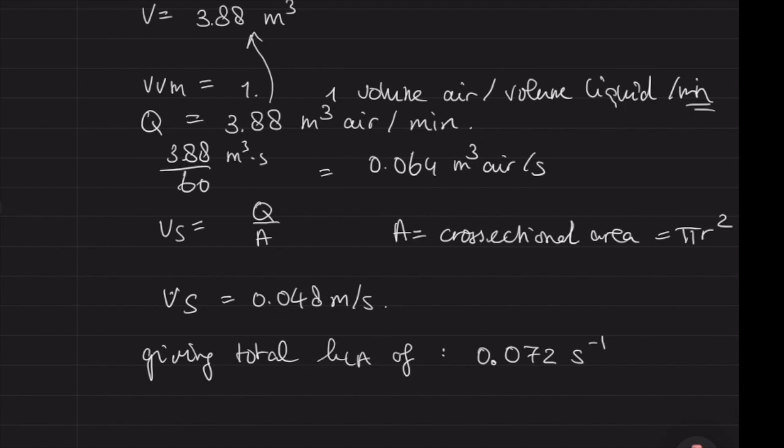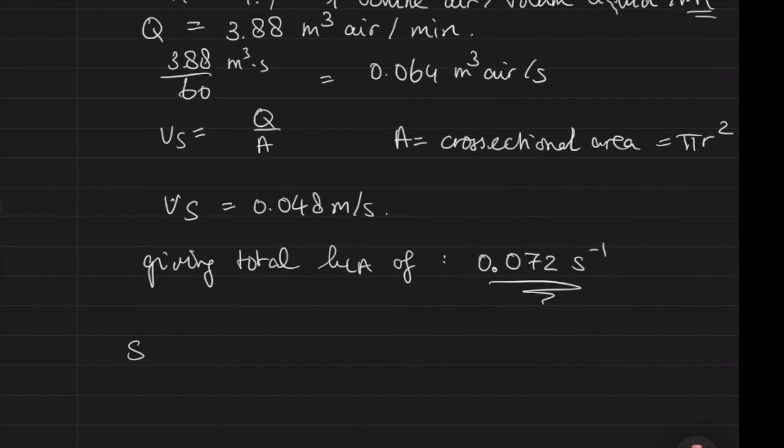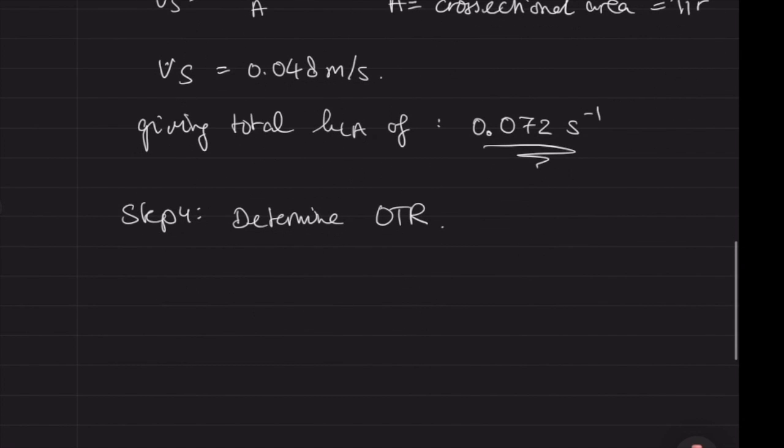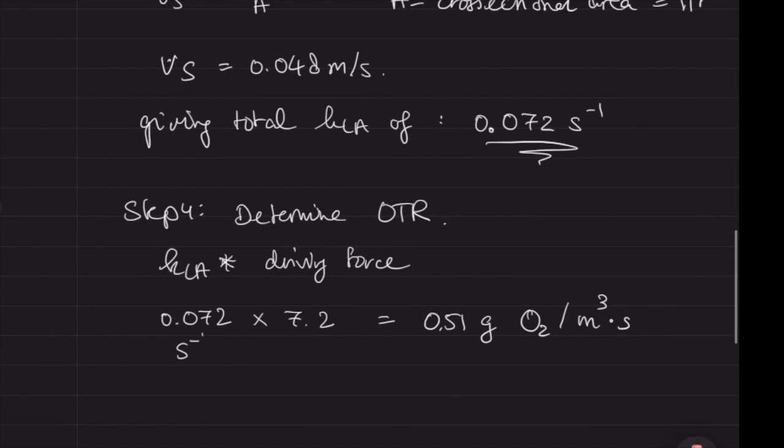We've got the power, the superficial gas velocity, and need to fill out the complete formula from the beginning. The formula was dependent on P, Vs, and V. If you fill this out with the empirical formula, you should get a KLA value of 0.072 per second. Now we have KLA and the concentration gradient. We just need to make sure we look at the correct units. Multiply these together, and you should come down to roughly half a gram of oxygen per cubic meter per second.